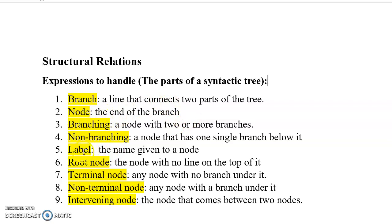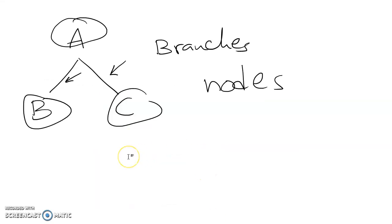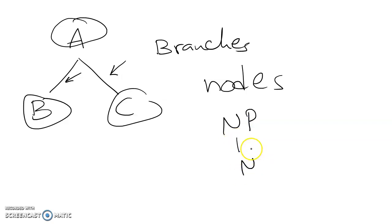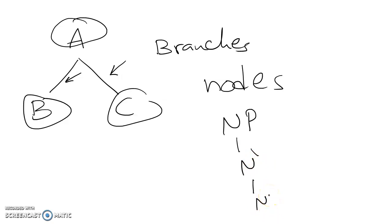Here we have something called label — it is the name given to a node. In real trees, once we have something like NP, that can consist of N-bar, then N. So we can say this node is labeled as NP, this node is labeled as N-bar, and this node is labeled as N. These are the names given to the nodes.